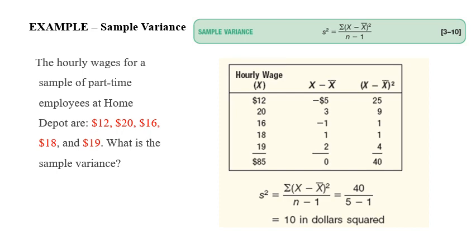Here in this example, the hourly wages for a sample of part-time employees at Home Depot are $12, $20, $16, $18, and $19, and we are looking to determine the variance in this case. Here we should write it consequently in the hourly wage or x column from 12 to 19. The sum is 85, 85 over 5, this is 17, the mean.